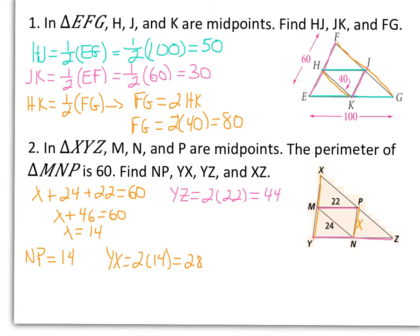And then finally, MN is parallel to XZ, so XZ will be twice the length of MN, so 2 times 24, or 48. So the midsegment is half the length of the line segment it is parallel to in the big triangle, or you could think that the line segment in the big triangle is twice as big as the midsegment it is parallel to.